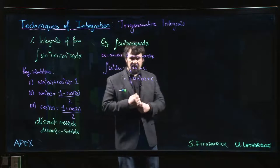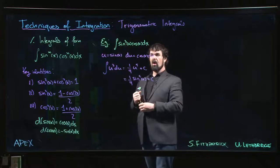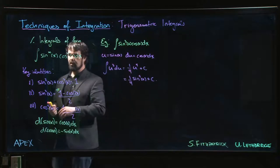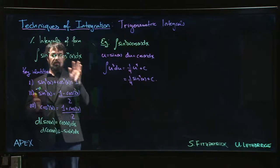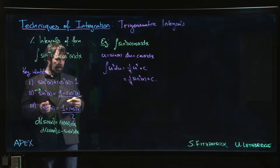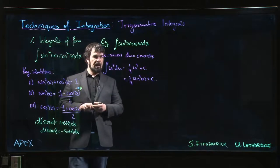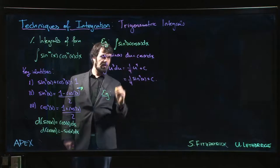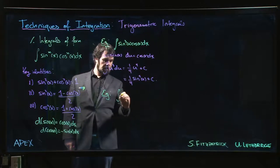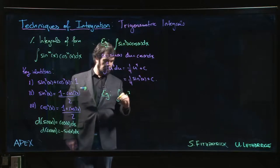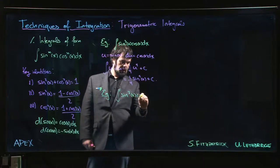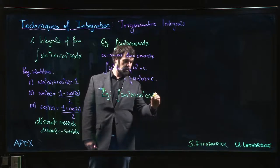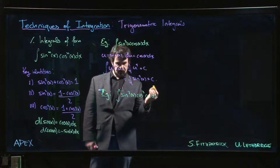Of course they're not always going to be that easy, but we are happy when we see odd powers of sine or cosine, because it does mean that we can sort of split something off. So if we had, just as a slightly more complicated example, let's say we had something like, instead of sine cubed times cos, maybe I have sine cubed x and then cos cubed x. Instead of just cos, I have cos cubed.